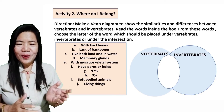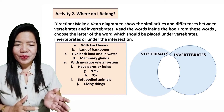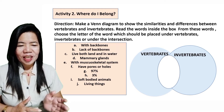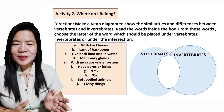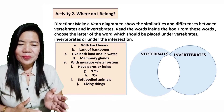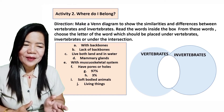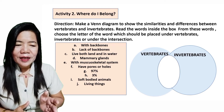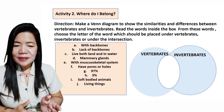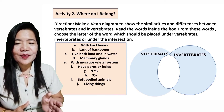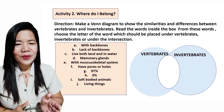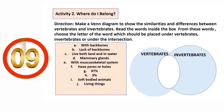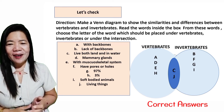Okay, to go deeper, let us do Activity 2: Where do I belong? Direction: Make a Venn diagram to show the similarities and differences between vertebrates and invertebrates. Read the words inside the box. From these words, choose the letter of the word which should be placed under vertebrates, invertebrates, or under the intersection. You have 10 seconds to answer. Go! Let us check your answer. Congratulations!